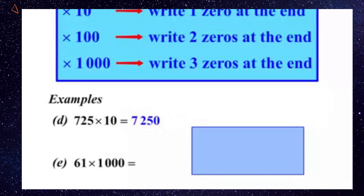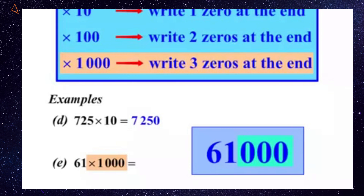Our next one: 61 times 1000. Well, let's write our 61 down. Now we're multiplying by 1000 — times by 1000, we write three zeros at the end. So there we have it: 1, 2, 3 zeros. And our answer there is 61,000.